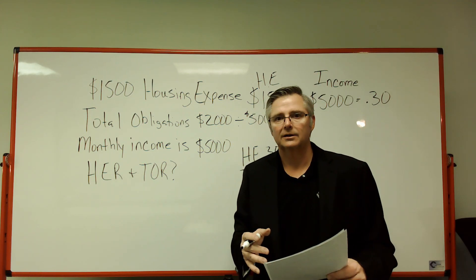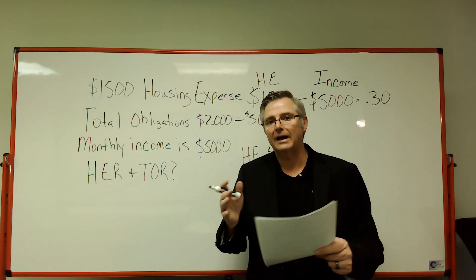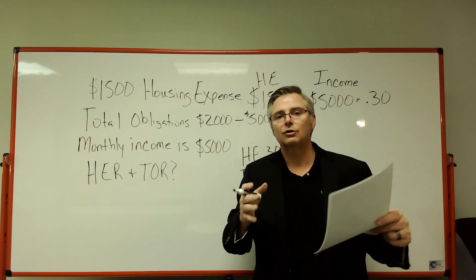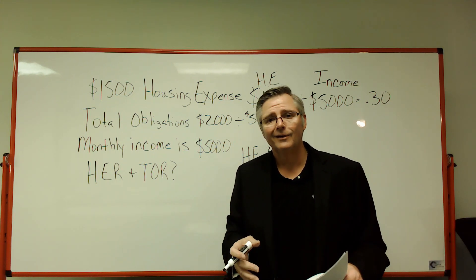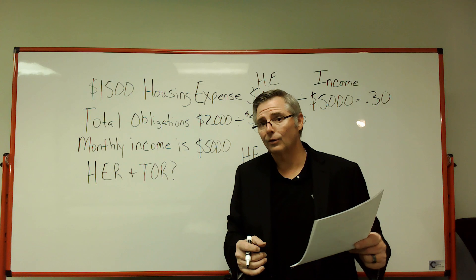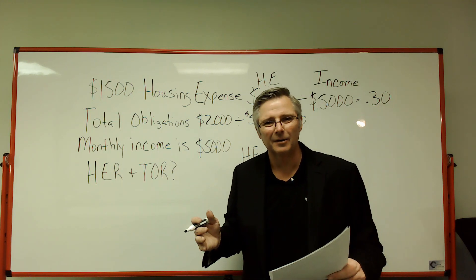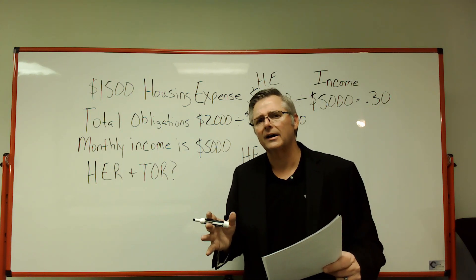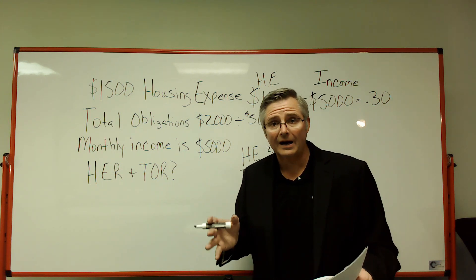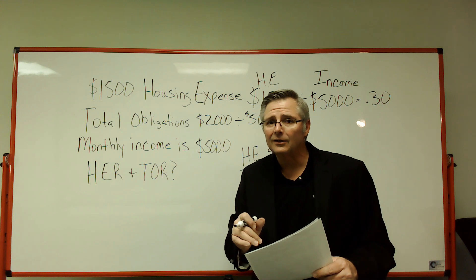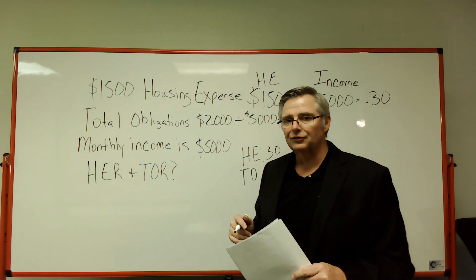That's how you figure out the total obligation ratio and the housing expense ratio. Keep it simple: for housing expense, take the housing expense divided by income. For total obligation ratio, take the total obligations — it's stated right in the question — and divide by income. Some people know it as debt-to-income, but in real estate we call it the total obligation ratio or housing expense ratio.